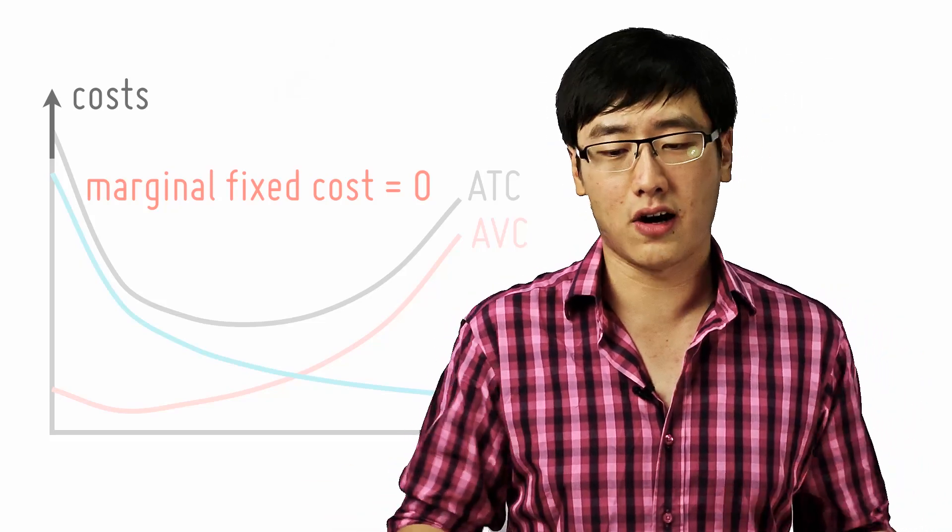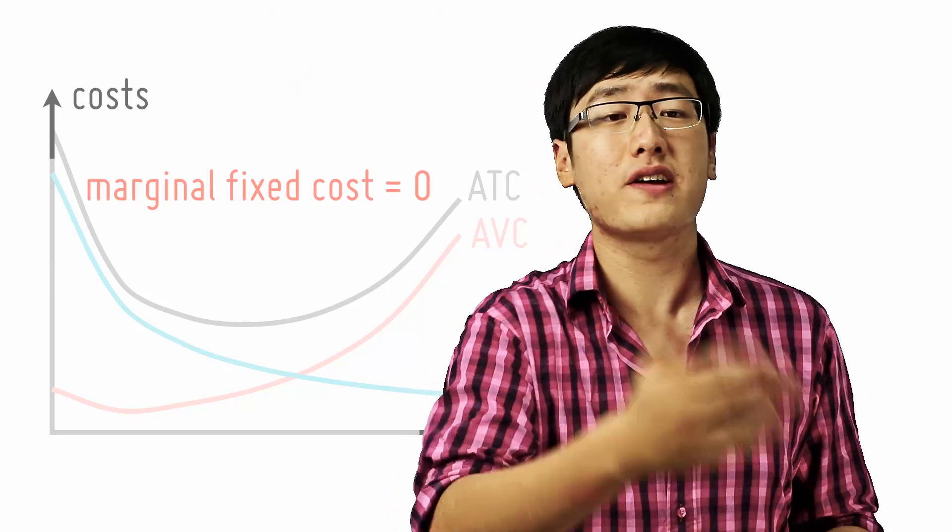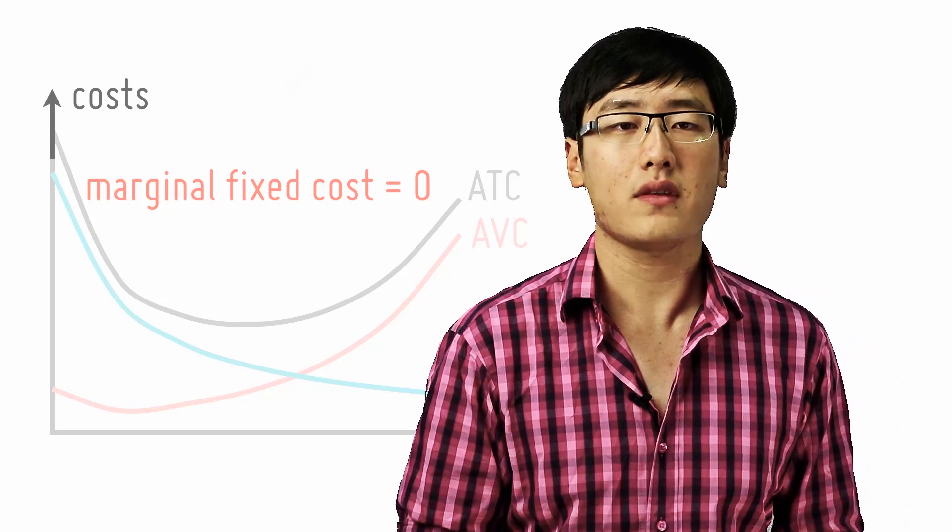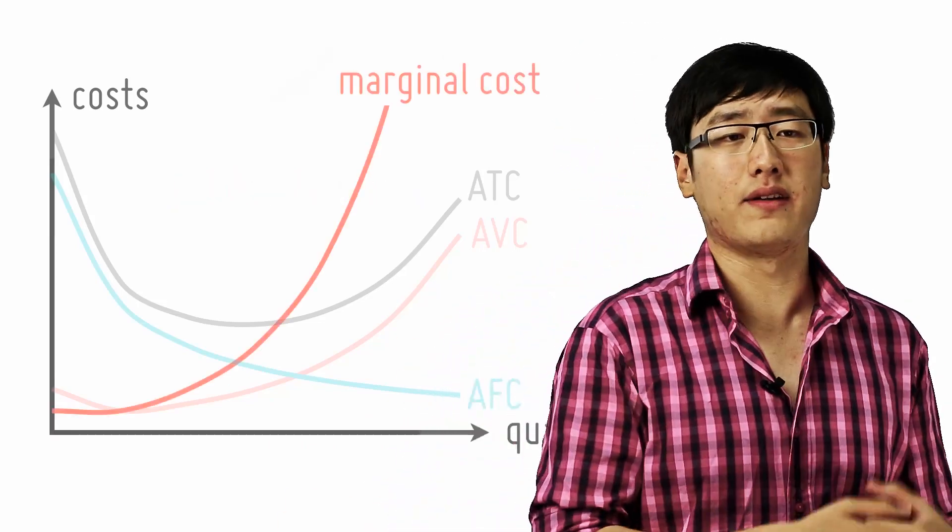So does that mean that your fixed cost is zero? No, it doesn't. It just means that the additional fixed cost per unit of production is zero. So when do we talk about marginal costs then? We only care about the variable costs.